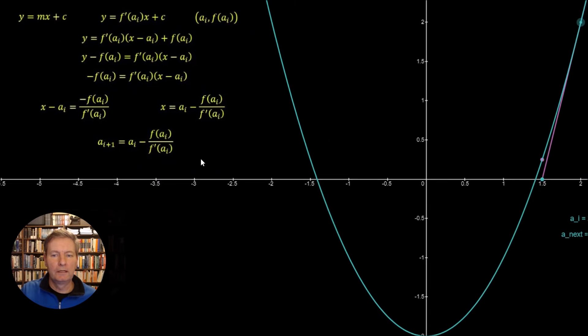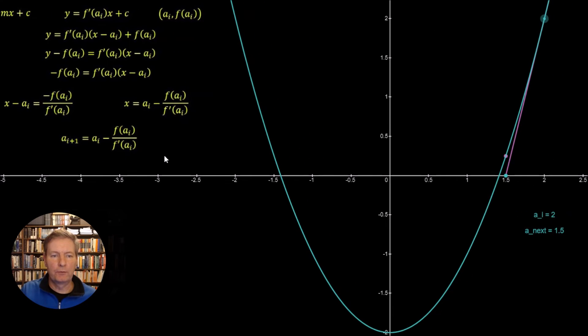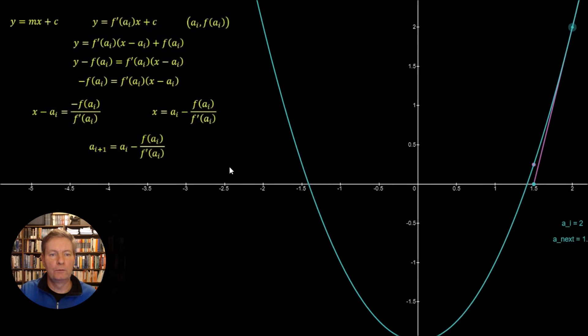Now we're going to take this example here of using x squared minus 2 and we will code it in our assembly language and we'll see it running. So let's go and we will do that now.